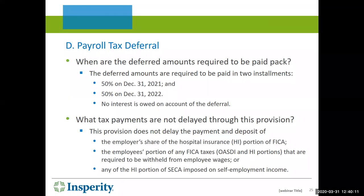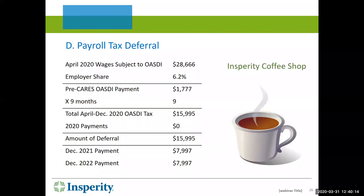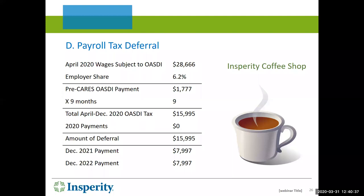Using the Insperity Coffee Shop example: taking one month's wages of $28,666 — the total wages subject to OASDI — and multiplying by 6.2%, you get $1,777. You can delay that monthly payment of OASDI for nine months, for a total capital of $15,995. That's for a coffee shop with only six employees — if you have more, the benefit is much greater.